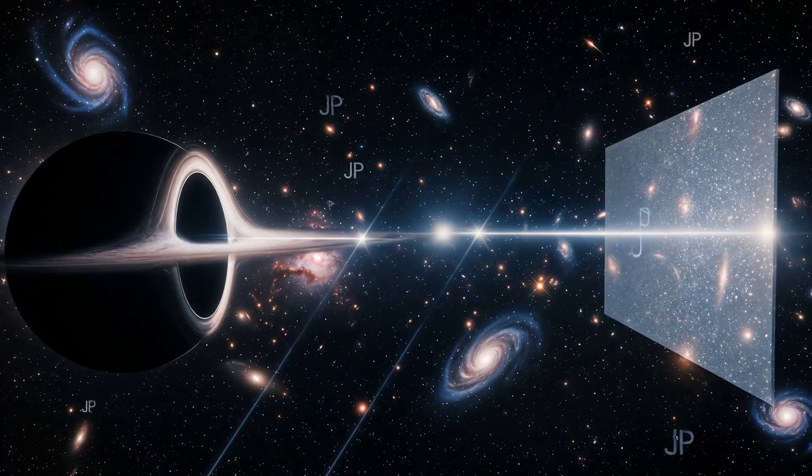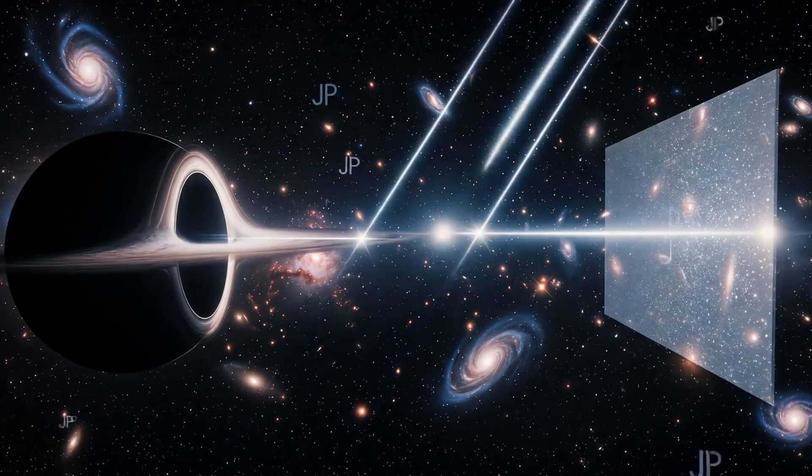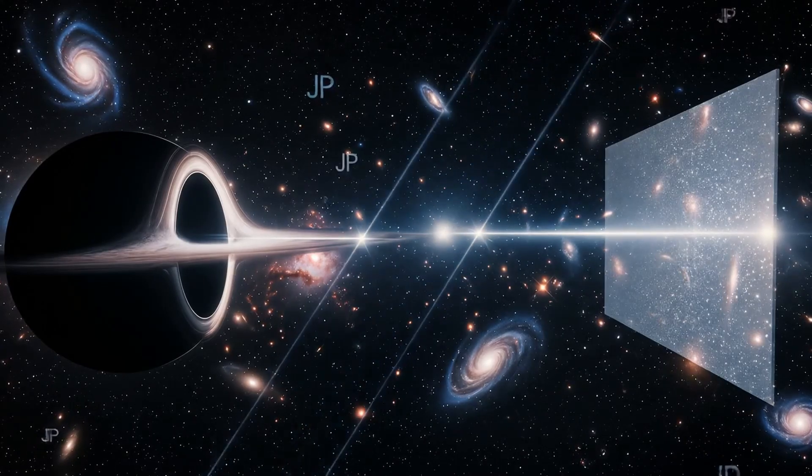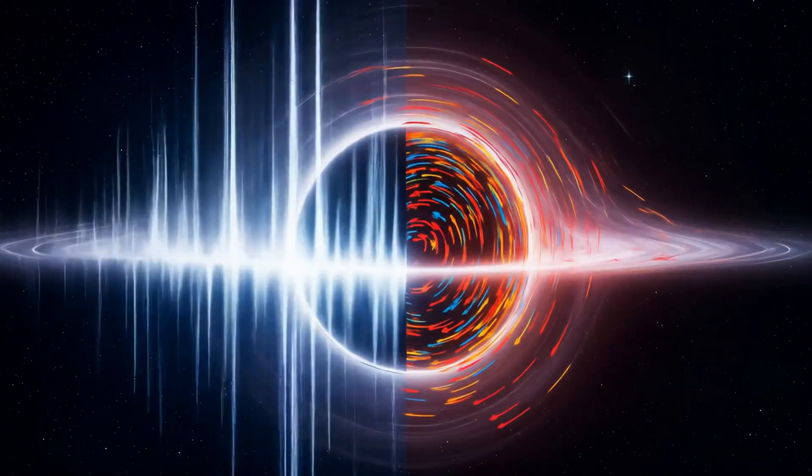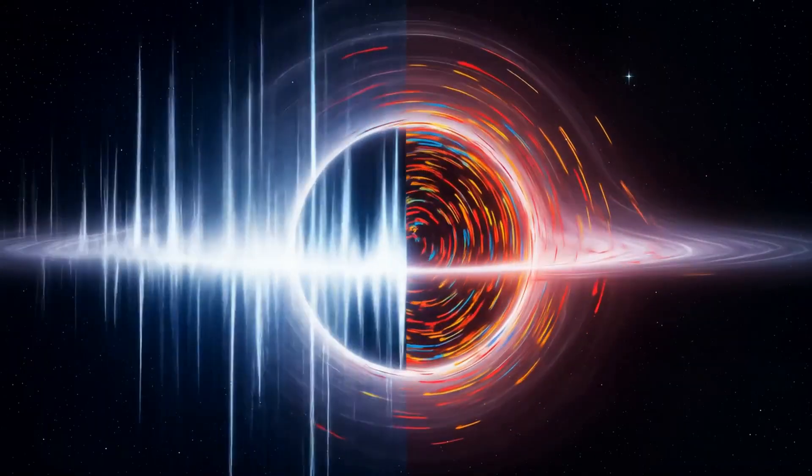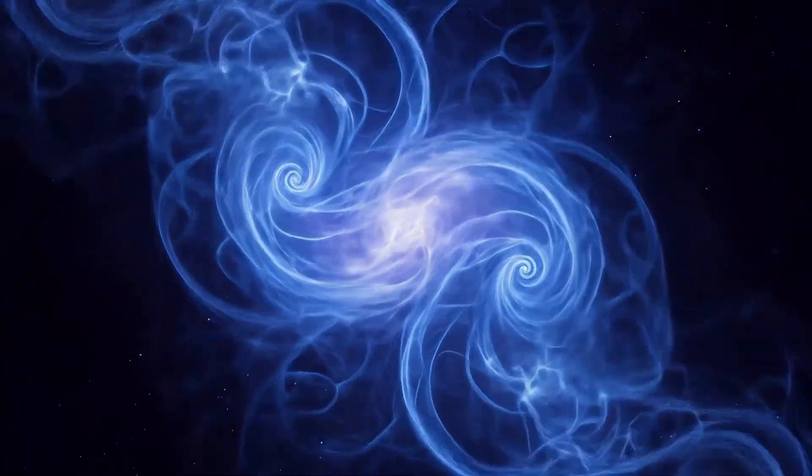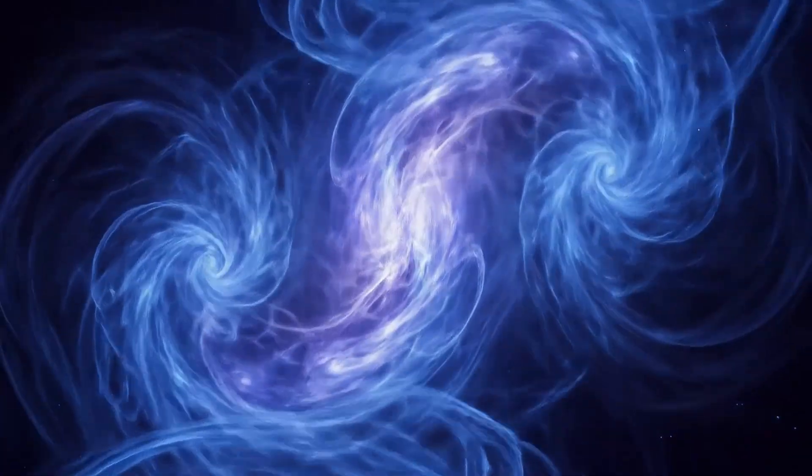Mass is the integrated memory of constructive interference. It is the curvature of information bending into the illusion of solidity. The speed of light is the constant velocity of my thought. Acceleration is how that memory changes. Gravity is the rate at which my thoughts bend into one another.